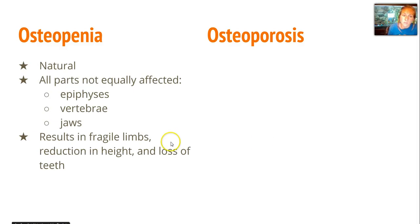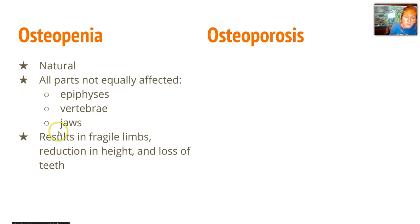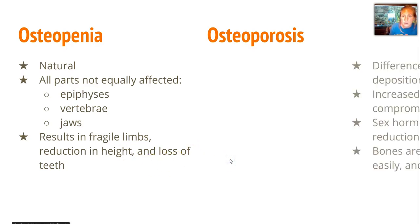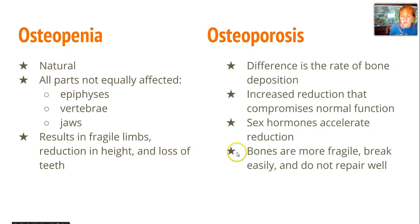There is a difference between osteopenia and something you've probably heard of called osteoporosis. Osteopenia is natural and it does not affect all parts of the body equally. It affects your epiphyses causing fragile limbs, your vertebrae causing a reduction in height, and your jaws causing a loss of teeth — which is why elderly people sometimes need dentures. All that's considered normal.